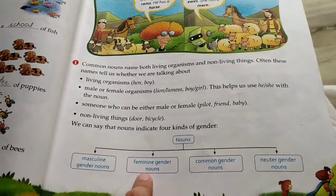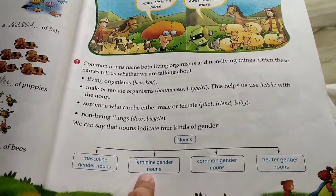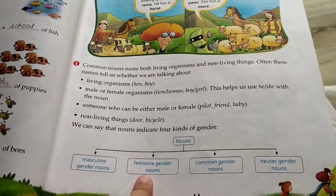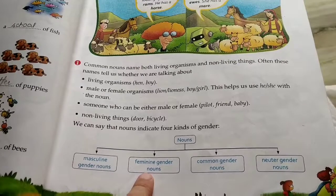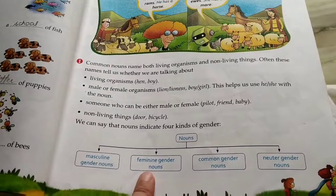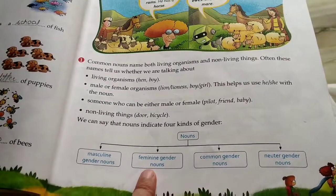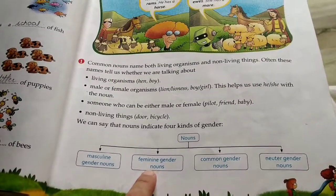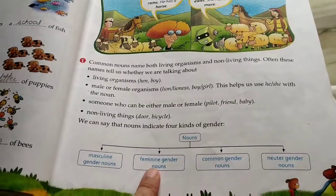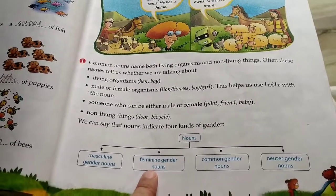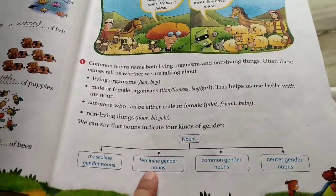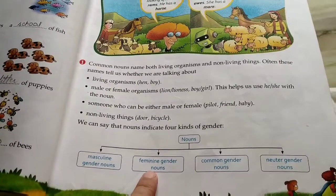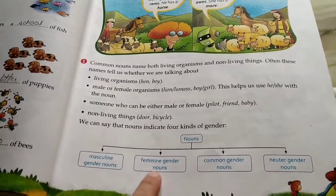Feminine gender nouns are words for women, girls, and female animals. For example: girl, aunt, wife, princess, etc.